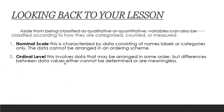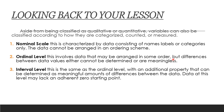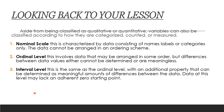The ordinal level involves data that may be arranged in some order, but differences between data values either cannot be determined or are meaningless. The interval level is the same as the ordinal level with the additional property that meaningful amounts of difference between data can be determined. Data at this level may lack an inherent zero starting point.